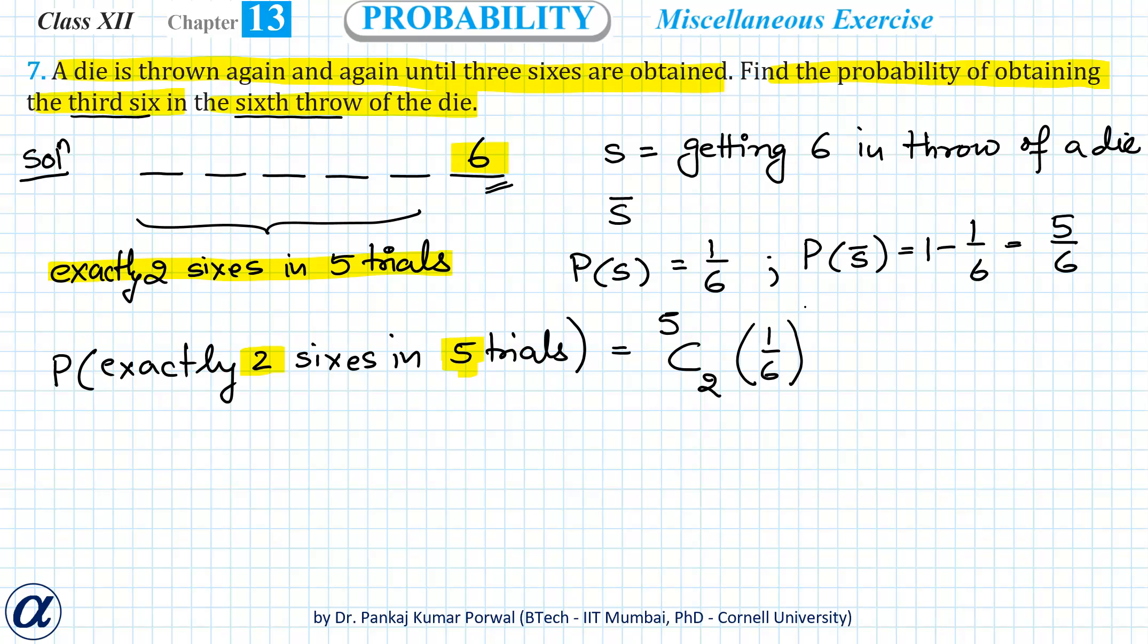Then probability of getting a six, that is 1/6, raised to the power of number of occurrences of six, that is two, times probability of not getting six, that is 5/6, raised to the power of number of occurrences of that event, that will be three, because total five repetitions, two occurrences of six, then remaining three should be not a six.